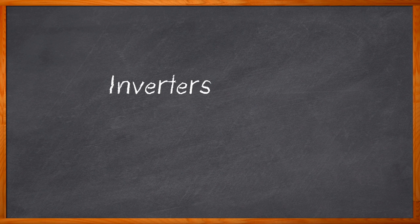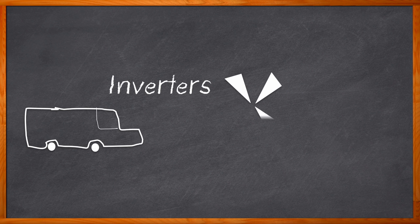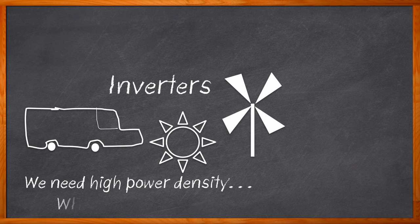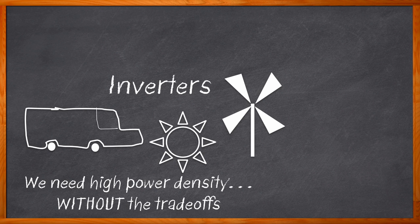Let's talk about inverters. They are crucial to the development of a variety of electronic designs, including many green technologies like electric buses, wind turbines, and solar applications. But getting the high power density we need for those applications can be a challenge. In addition to high power density, we also need to ensure scalability, reliability, and manufacturability. So how can we achieve the high power density we need without sacrificing manufacturability or reliability? By looking at the EconoDual and Easy power modules from Infineon.